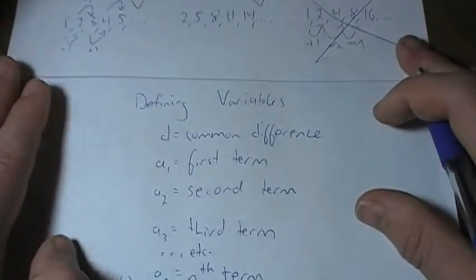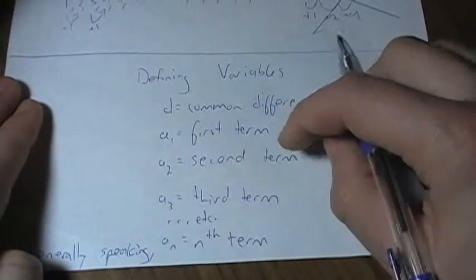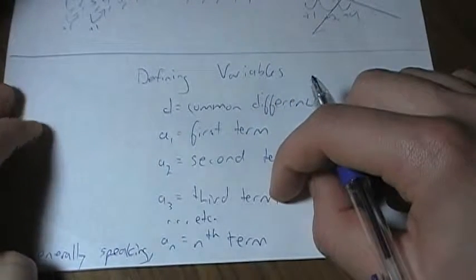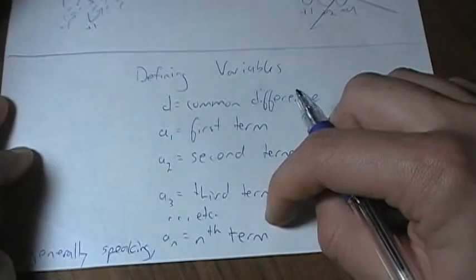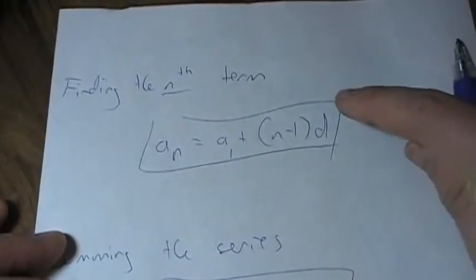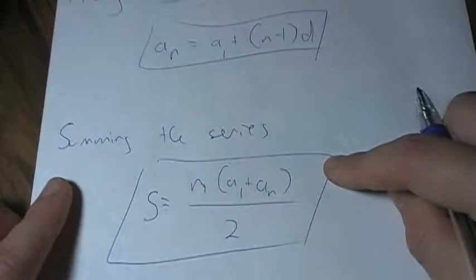Before moving on, let's quickly define some variables. D is the common difference. A1 is the first term, A2 is the second term, A3 is the third term, etc. And generally speaking, a sub n is the nth term. In this video, I'm going to focus on two formulas: a formula to find the nth term, and a formula to sum the series.